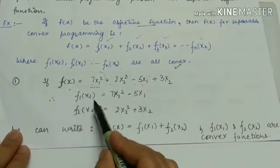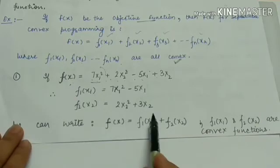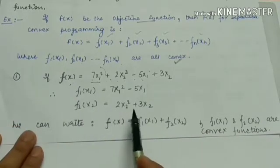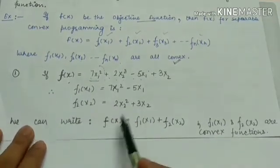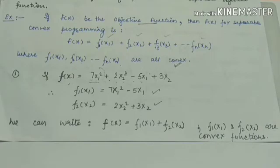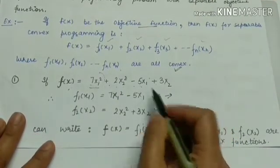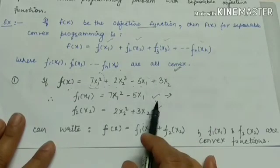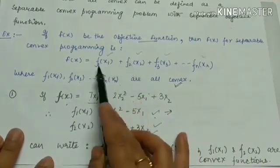From the example, f1(x1) = 7x1² − 5x1 and f2(x2) = 2x2² + 3x2. Then f(x) = f1(x1) + f2(x2). If both f1(x1) and f2(x2) are convex in nature, then f(x) is a separable convex function. A big function can be written as two separable linear functions that are convex, making it a separable convex programming problem.